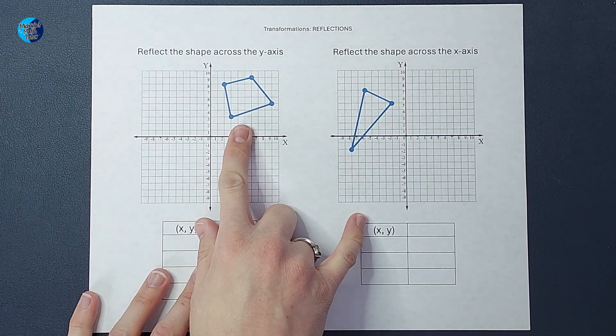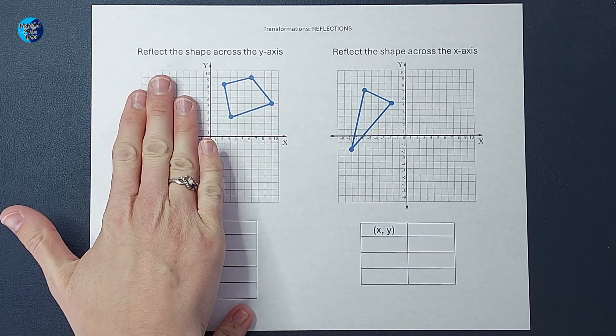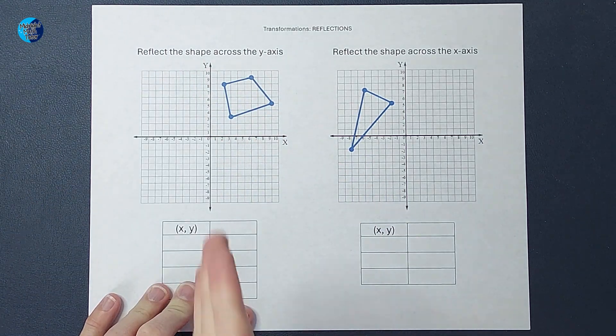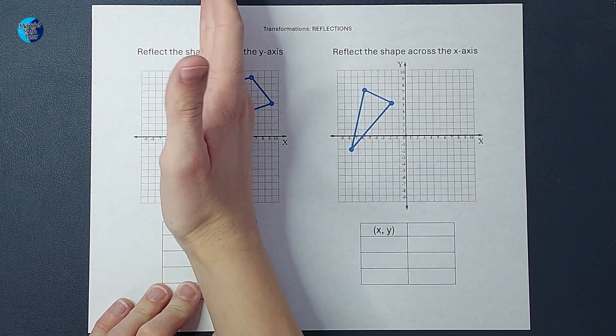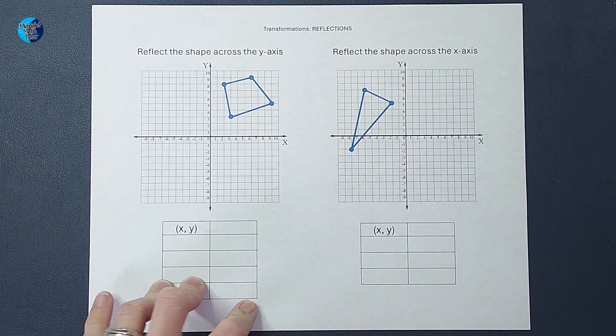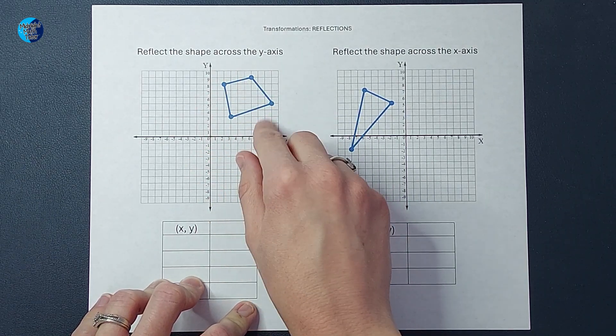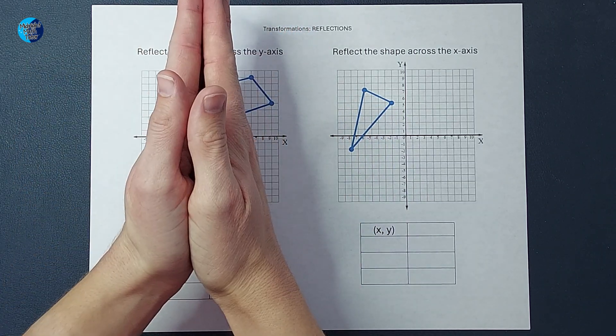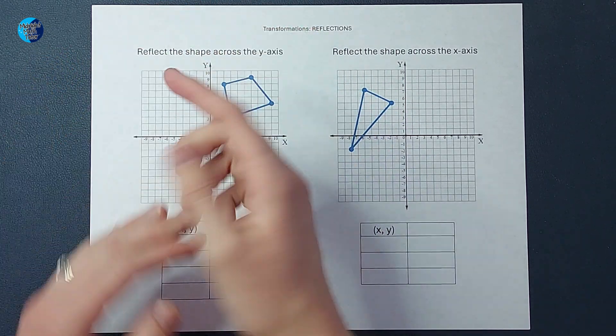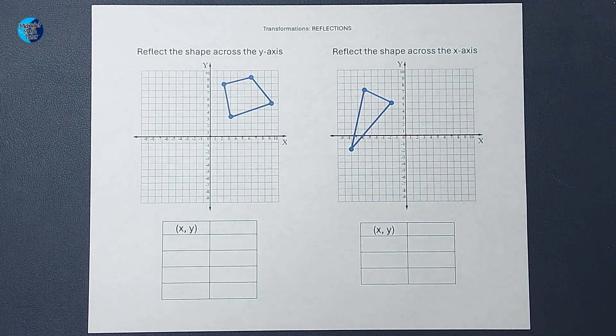So if we look at this shape here, here is our y-axis. We want to reflect this shape across it. One way to think of it is like if this y-axis were a mirror, or another way I like to think of it is if this shape had wet paint and we were to fold on the y-axis and unfold it, what it would look like on the other side. That's what we're trying to do.